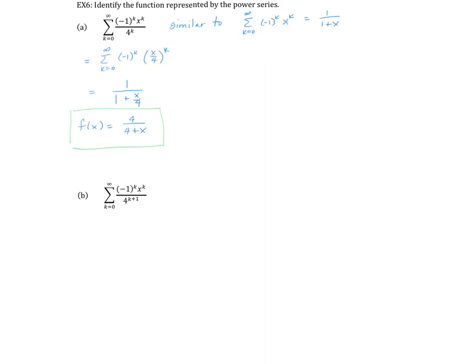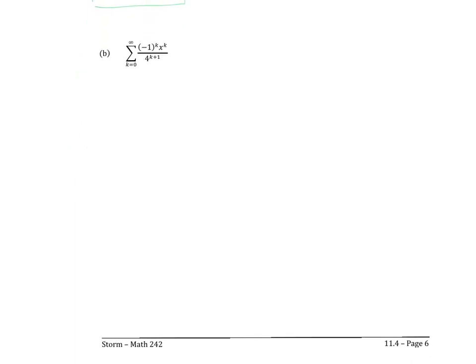That's sum of (-1)^k · (x/4)^k, which matches the 1/(1+x) series with x replaced by x/4, giving 1/(1 + x/4). Simplifying this complex fraction by multiplying by 4, the function for part A is 4/(4+x).